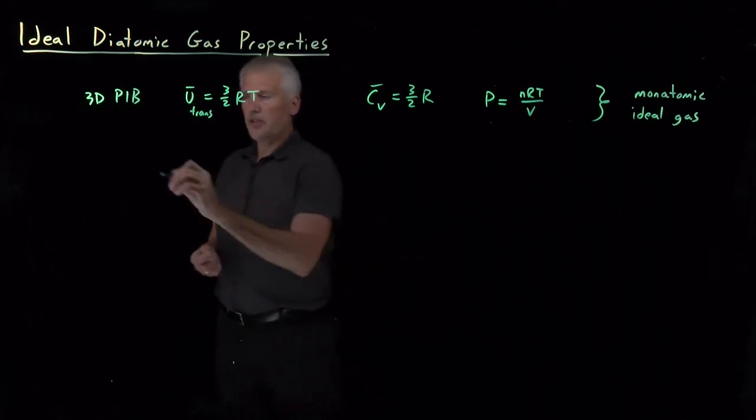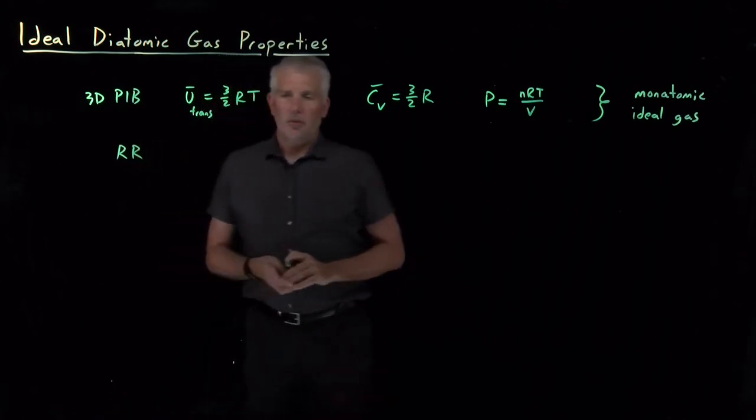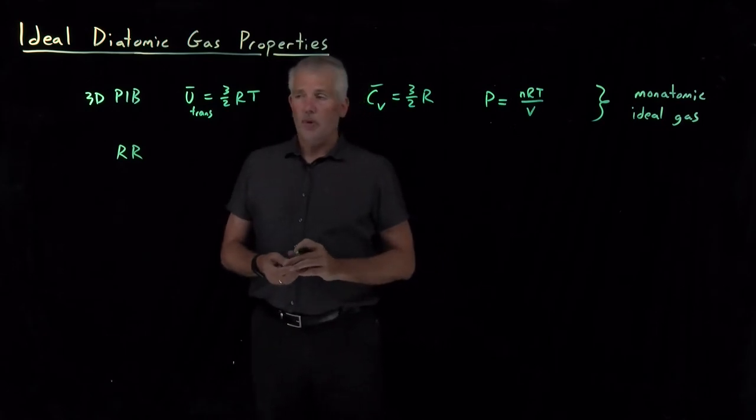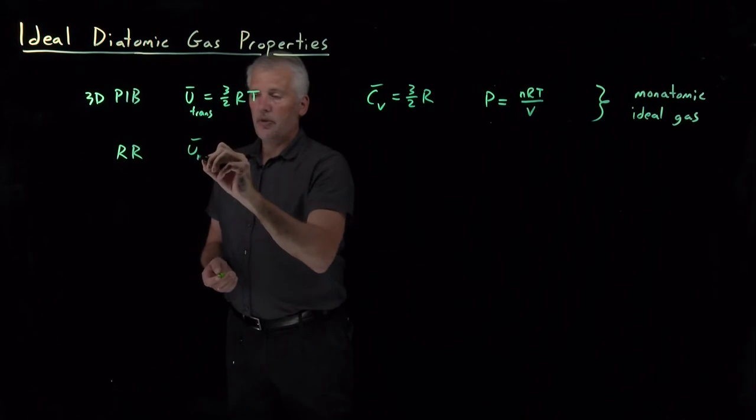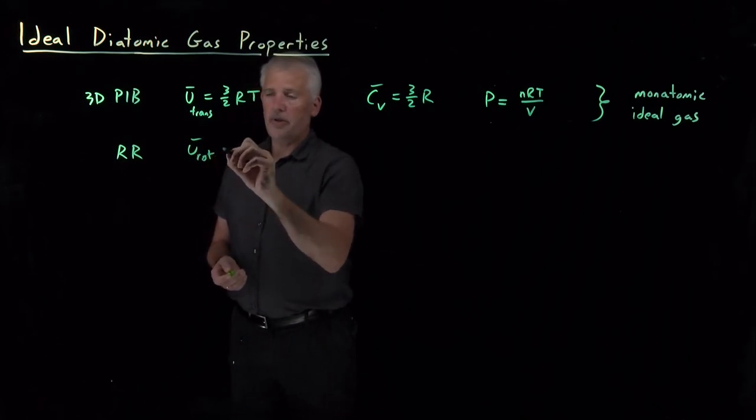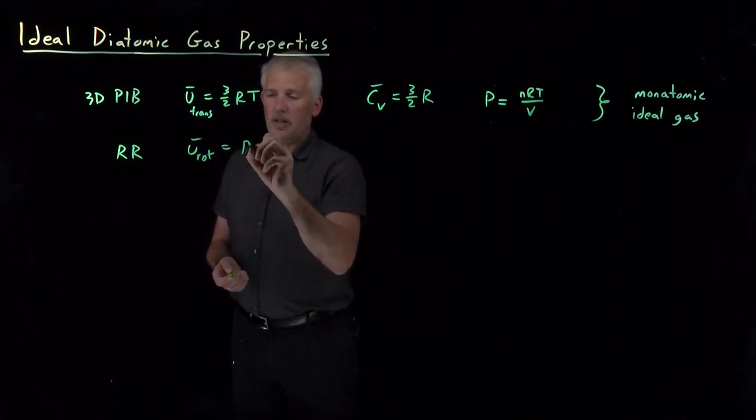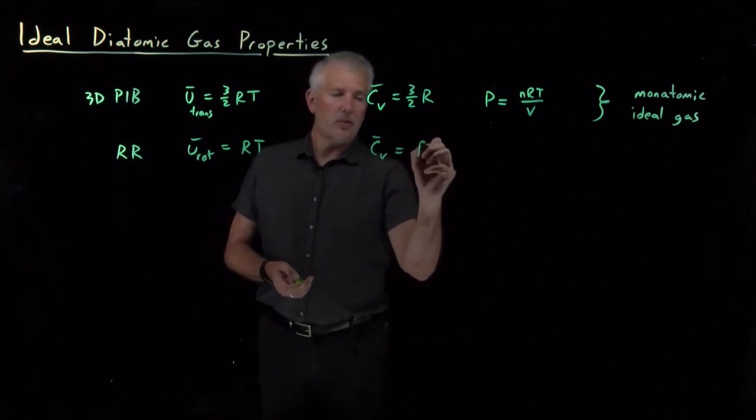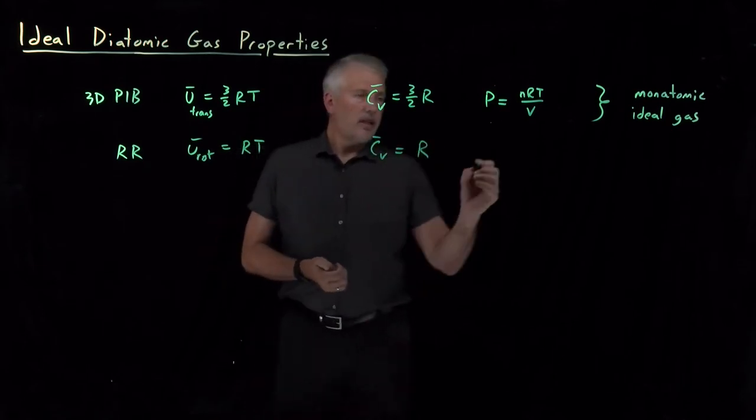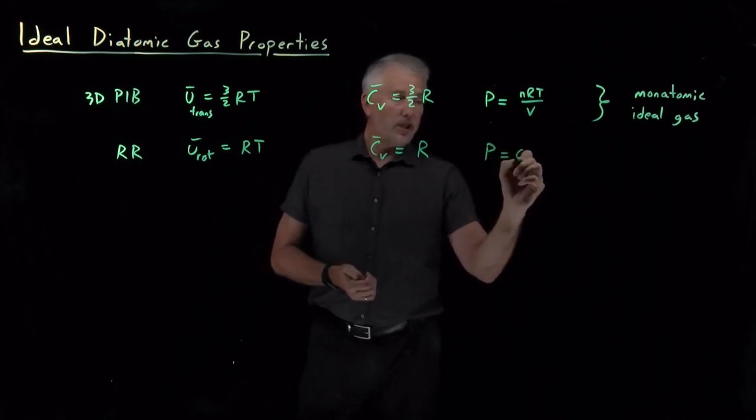So to consider the rotational motion, we talked about the rigid rotor model. When we calculated the thermodynamic energy, the internal energy due to rotation of a diatomic molecule, that worked out to be RT so that the heat capacity, constant volume heat capacity, was R. And the pressure due to the rotations was zero.